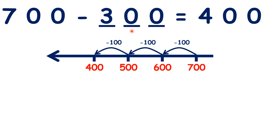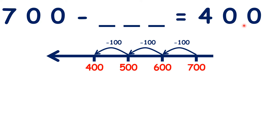So 300 is our missing number. But there's an easier way to get our missing number. Notice that 700 and 400 are both multiples of 100 — we know that because they both end in two zeros; they both have zeros in the tens and units place values.